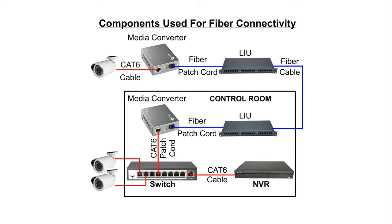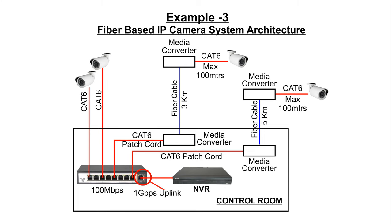When a camera is located 500 meters or more from the control room, Cat6 cannot be used. In this case, a media converter is used to convert the IP signal (RJ45) from the camera to an optical fiber signal. The fiber cable is laid between the camera and the control room. At the control room, another media converter converts the signal back to IP, which is then fed into the RJ45 port of the control room switch.